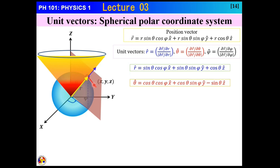Pictorially, projecting the unit vector theta-cap onto the z direction gives a component of minus sin theta, because it is directed downward. In the x-y plane it has a cos theta component, which is further decomposed along x and y by cos phi and sin phi respectively. You can verify these expressions either mathematically or pictorially.